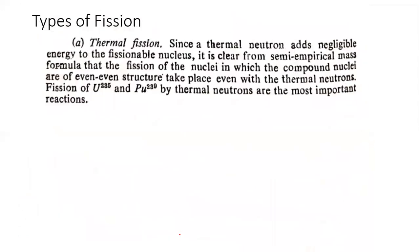There are types of fission available. Thermal fission: Since thermal neutrons add negligible energy to the fissionable nucleus, it is clear from semi-empirical mass formula that the fission of the nuclei in which the compound nuclei are of even-even structure takes place. Even with thermal neutrons, fission of uranium-235 and plutonium-239 by thermal neutrons are the most important reactions.